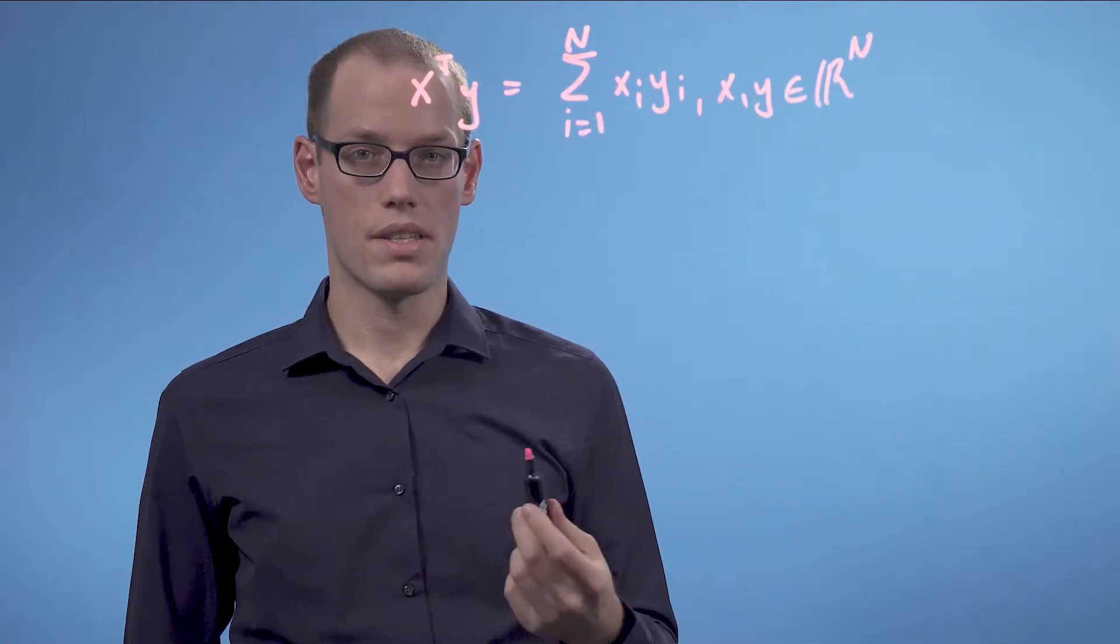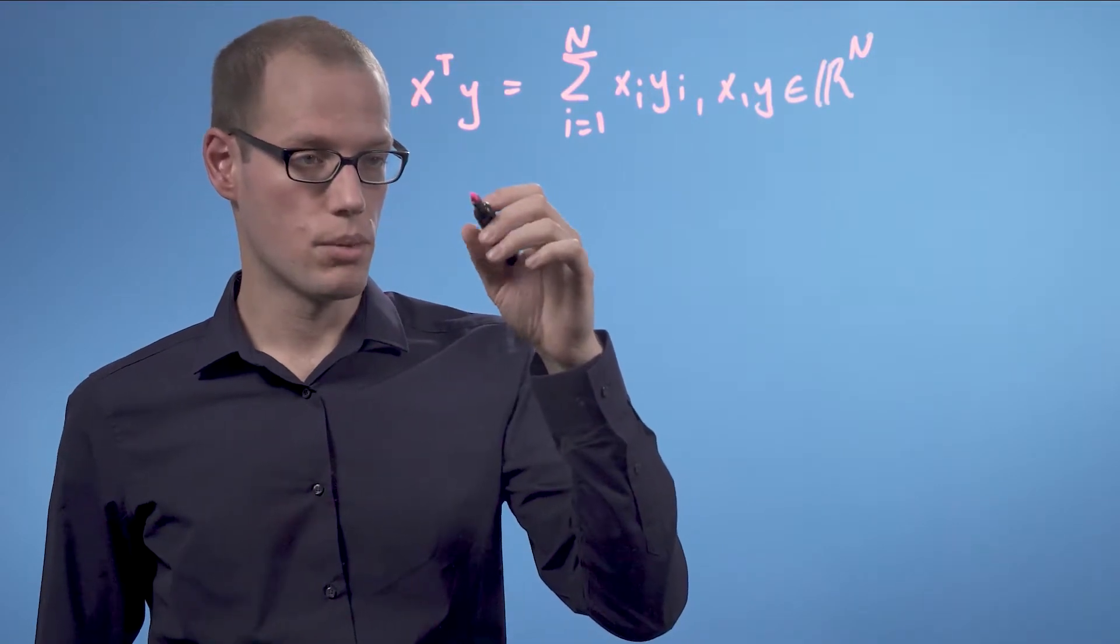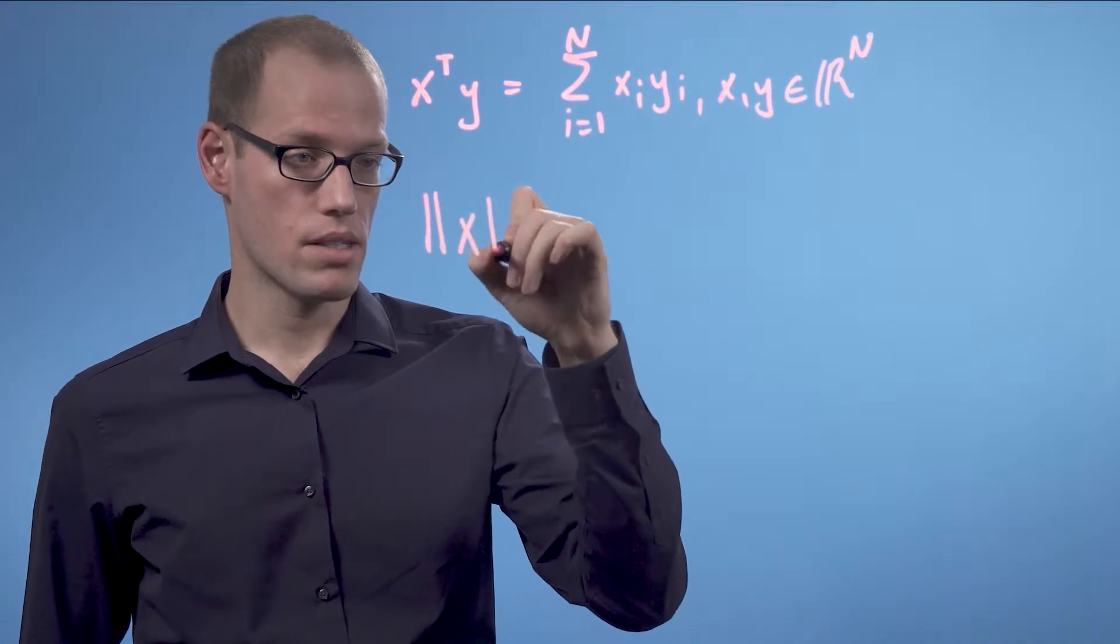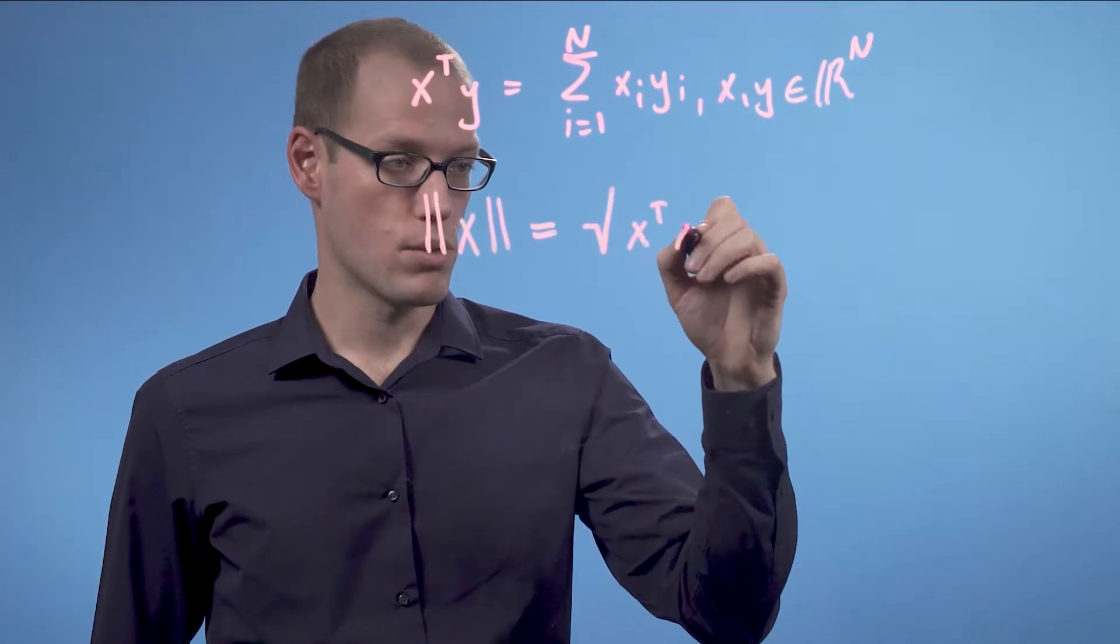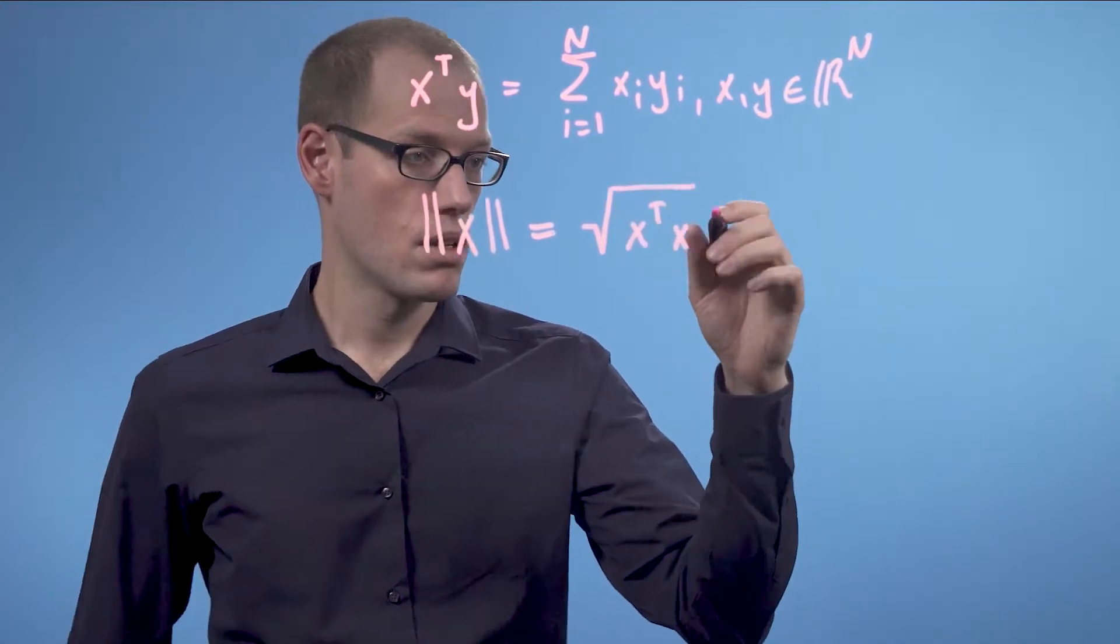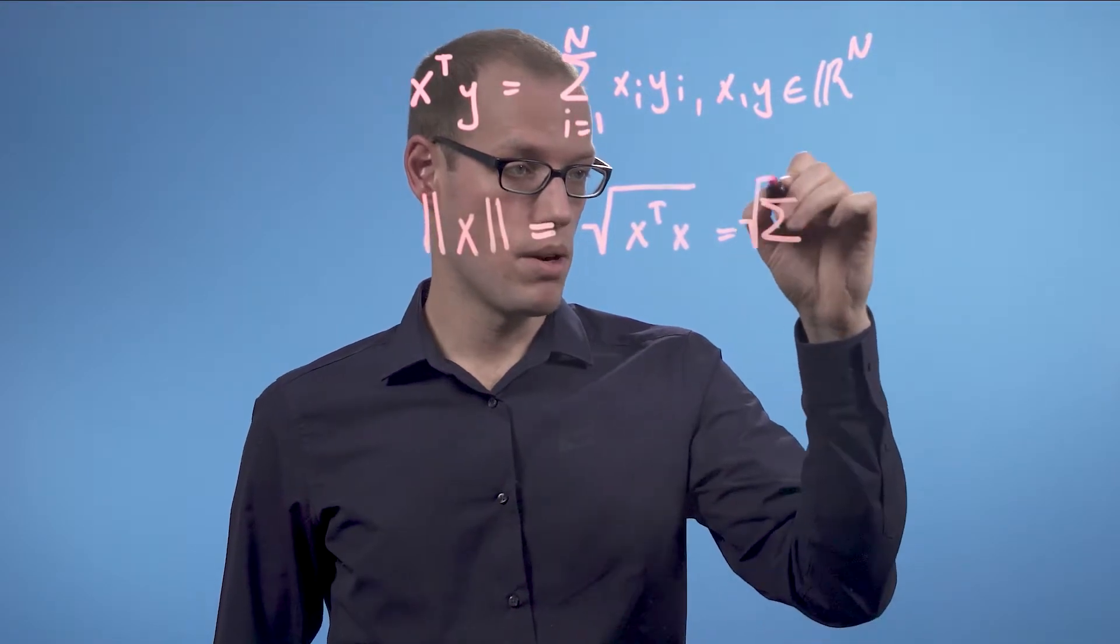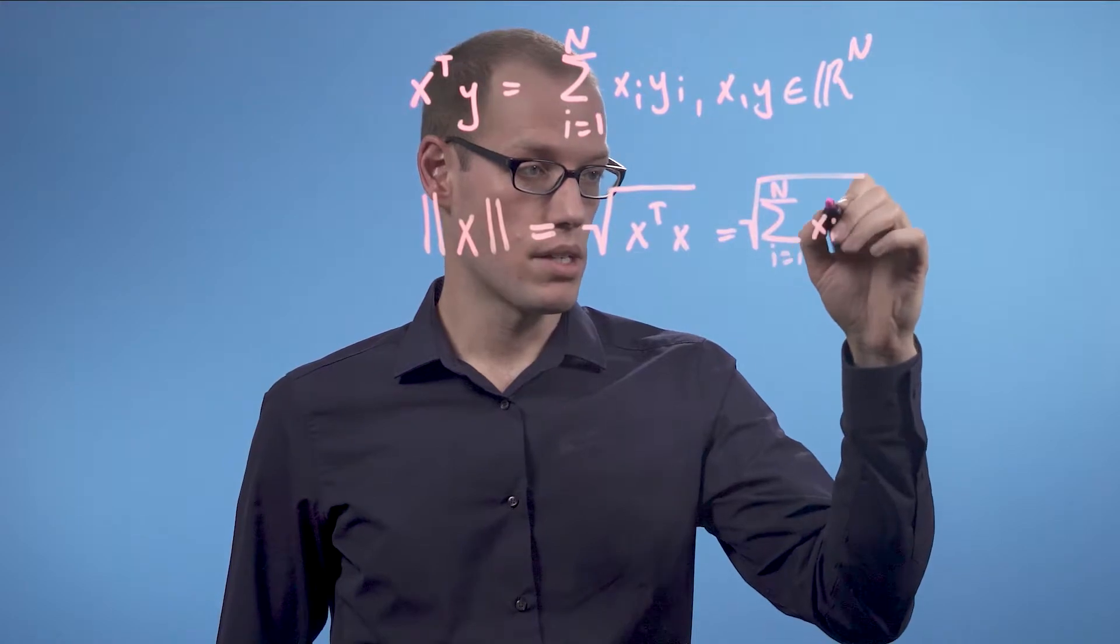The length of x is then defined as the square root of the dot product of x with itself, so the length of x is the square root of x transpose x, which we can also write as the square root of the sum from i equals 1 to n of xi squared.